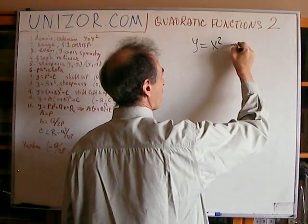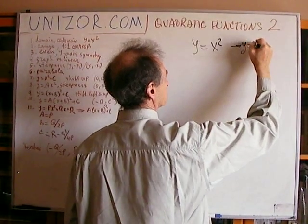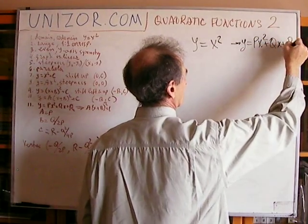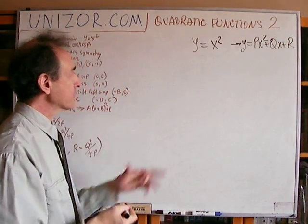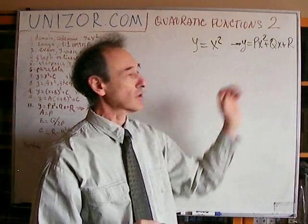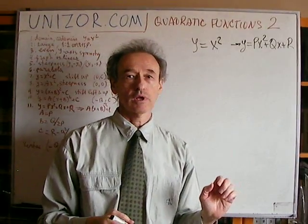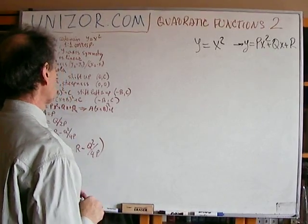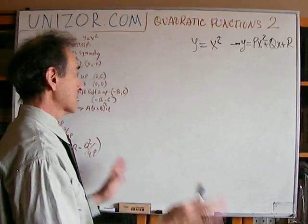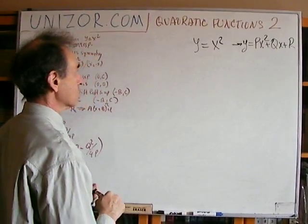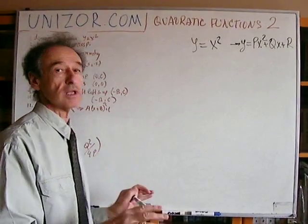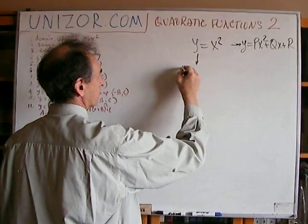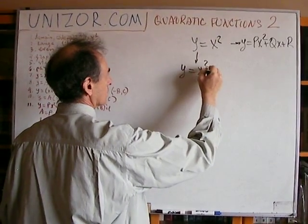We'll gradually move to a more general one. The properties of this function we will gradually transfer to this function. We will do it in steps. The first step is we will complicate just a little bit our function — we consider this one.